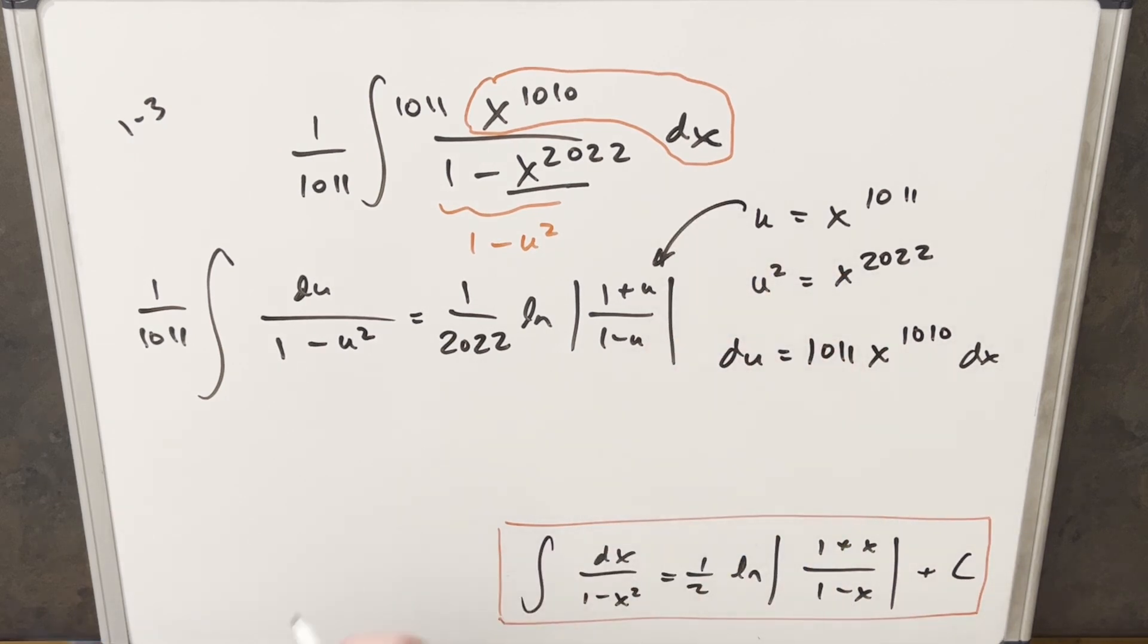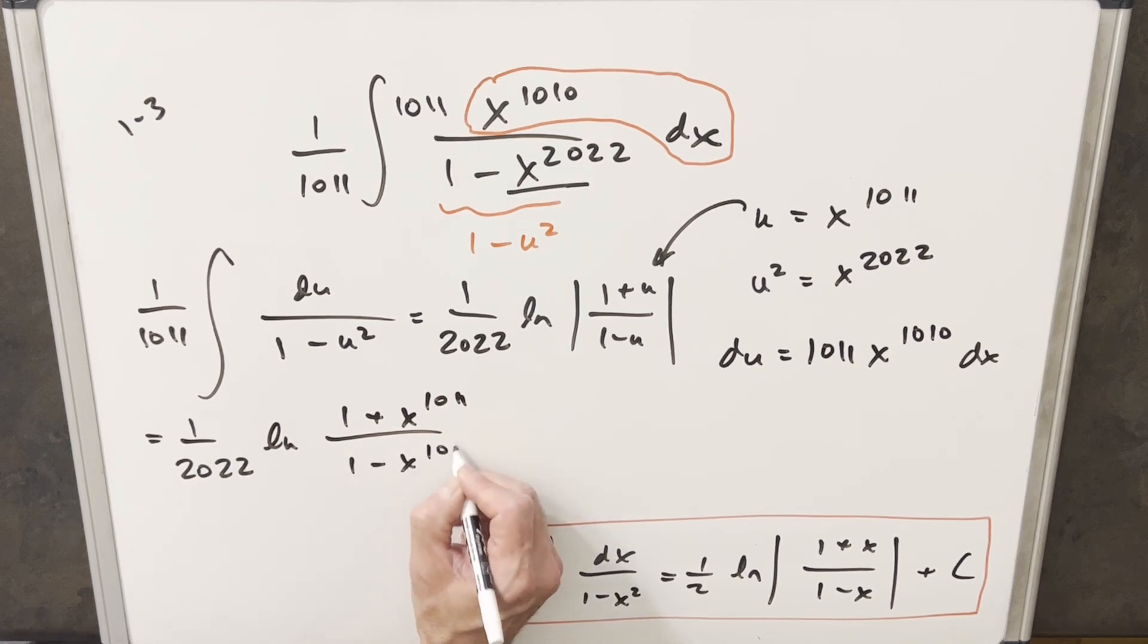And so all I need to do to finish it is just back substitute. So we're going to end up with for our final solution, 1 over 2022 natural log 1 plus x to the 1011 over 1 minus x to the 1011.